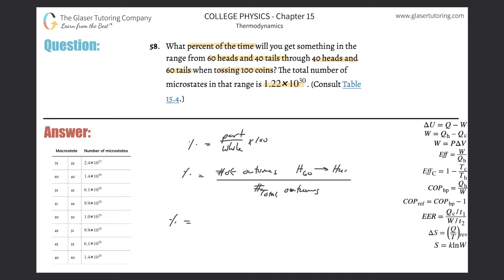But in terms of probability, in order to find this, you cannot just simply add these together because there's microstates within those microstates. There's 60, 40, then there's 59, 41, 58, 42, etc. That's not in the table.